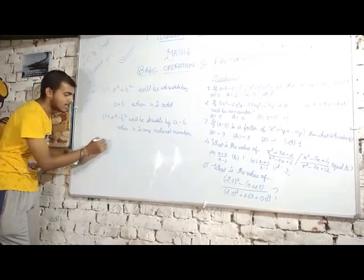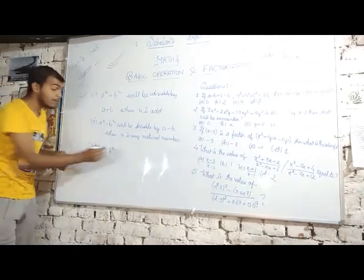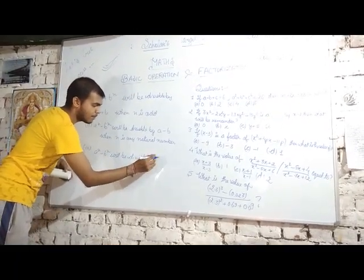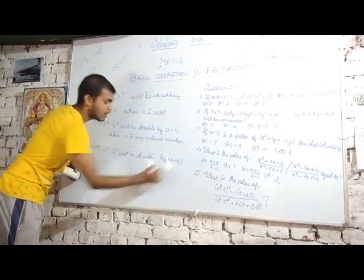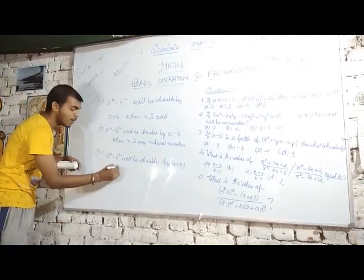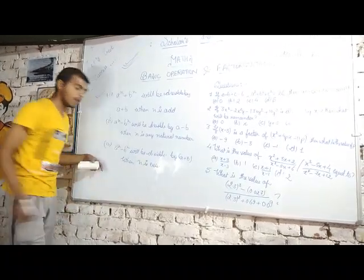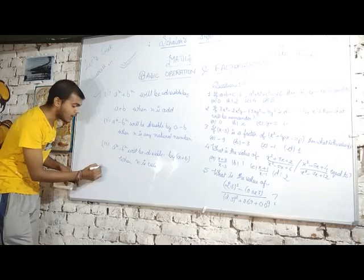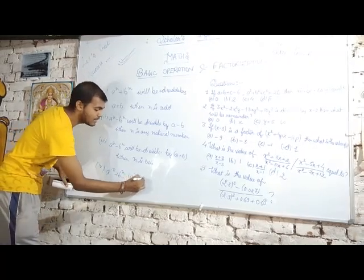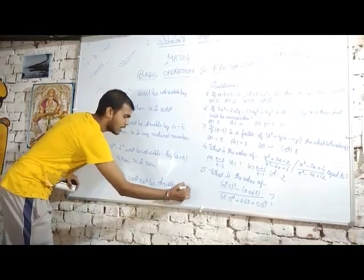One more formula — third point: a raised to power n minus b raised to power n will be divisible by (a + b) when n is even. And the fourth point: a raised to power n plus b raised to power n will NOT be divisible by (a - b).